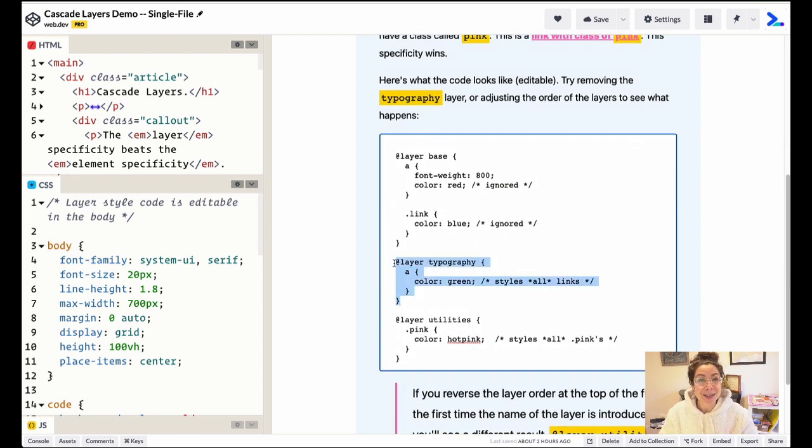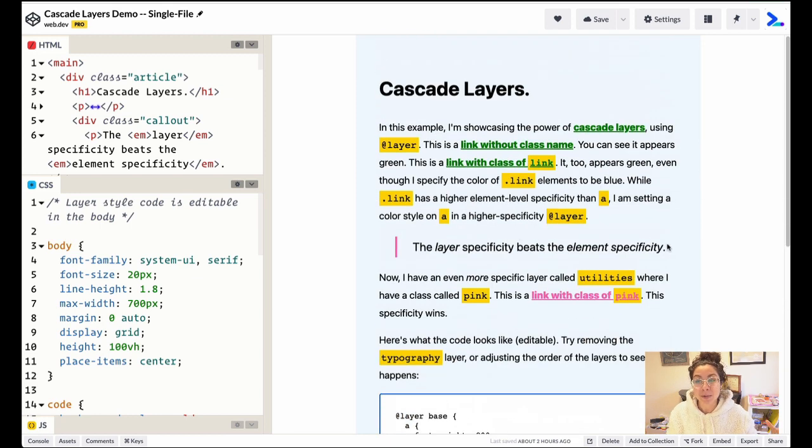The next layer, which is the typography layer has an a tag with the color green. This a tag is going to have a higher specificity than both the a tag and base and the link, the class in base. And that's because the layer specificity will override the element specificity.